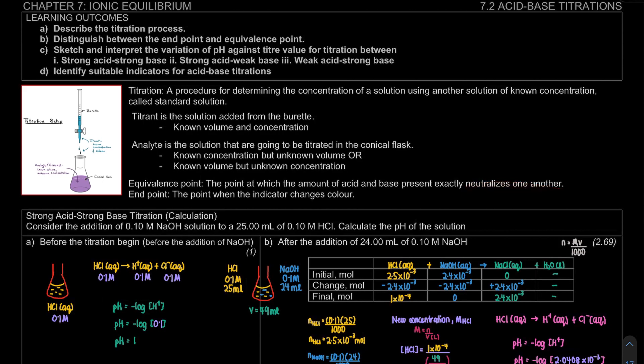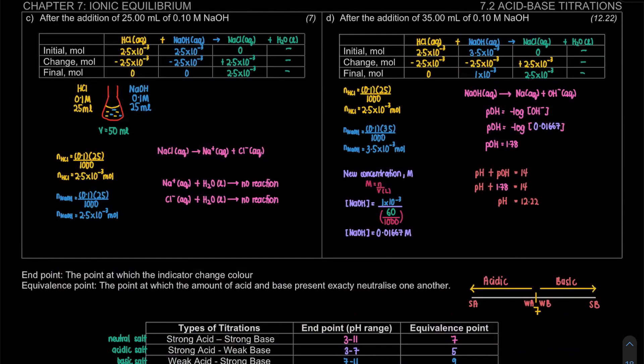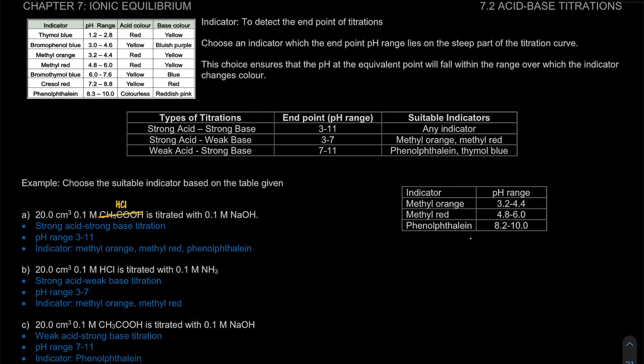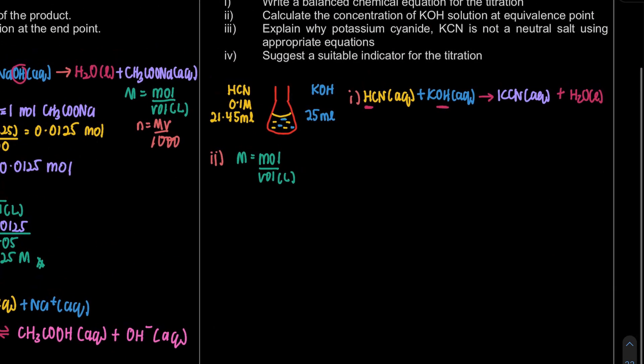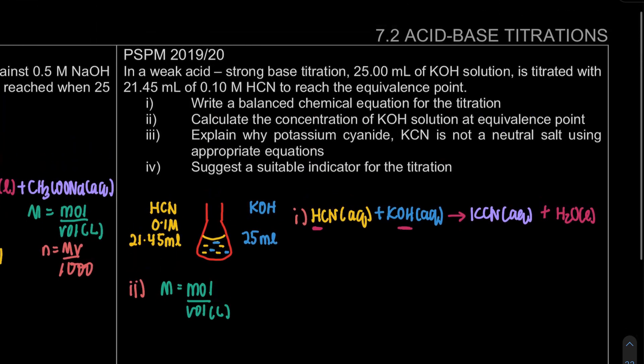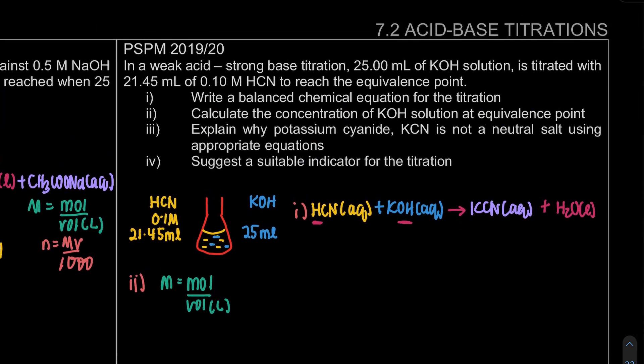So equivalent point means that our acid and base have neutralized each other. So if it's neutralized, then neutral. So what happened to the concentration? Actually question number two is intended to trick you. So I'm just going to write down, at equivalence point.